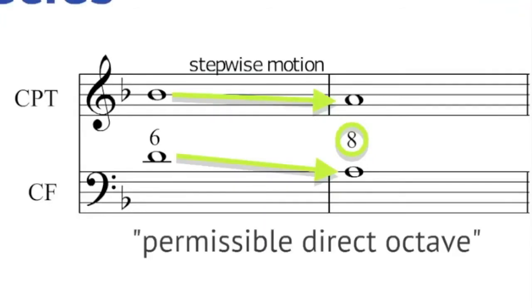There is an exception to this rule and that's if the upper voice is moving by step. That's an instance of a permissible direct octave or fifth. If the upper voice moves by step then it's all right.